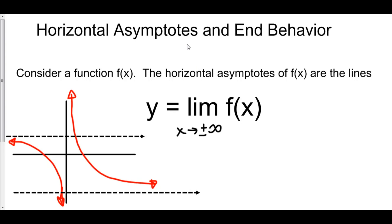Let's talk about horizontal asymptotes and the end behavior of functions. Consider some function f. We can find the horizontal asymptotes of f by taking the limit as x goes to both infinity and negative infinity. A horizontal asymptote is some horizontal line y equals something. To find that something, we just take the limit.